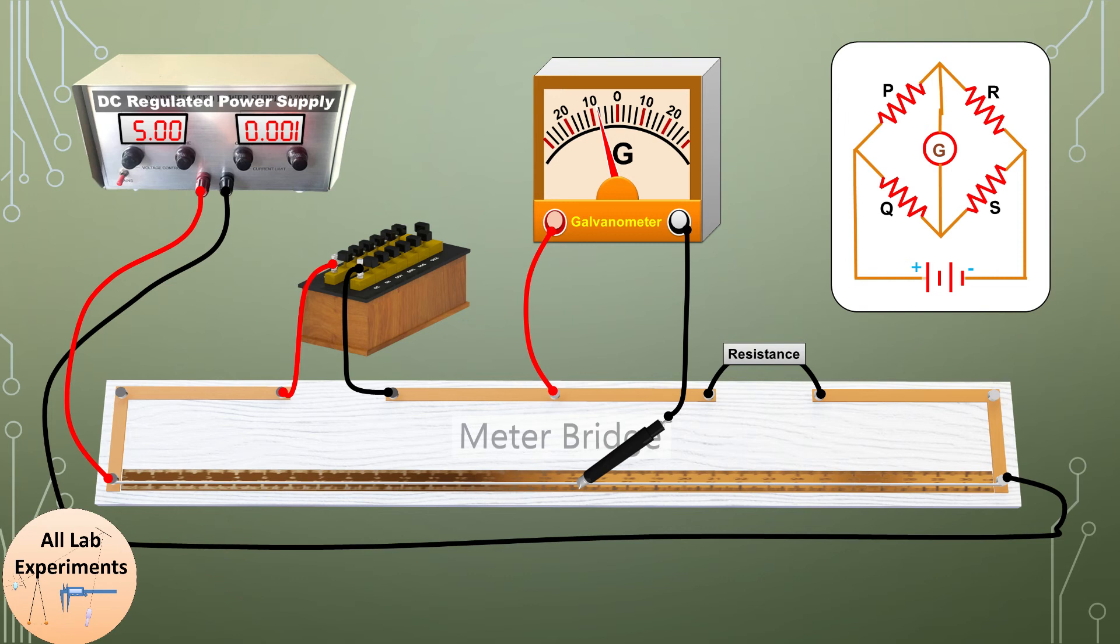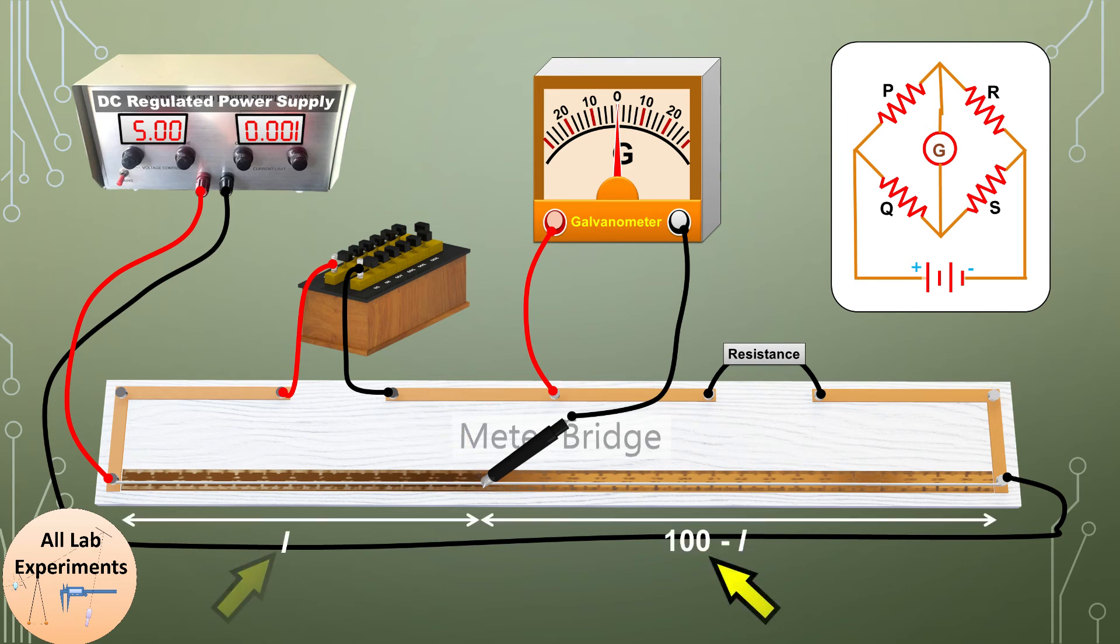So in this way we can interpret that there must be some point in between these two points where the galvanometer is not showing any reading. We stop at that point and note down the length of the wire towards right and left terminal. We are stating this as L and 100 minus L because the total length of this wire is 100 centimeters.